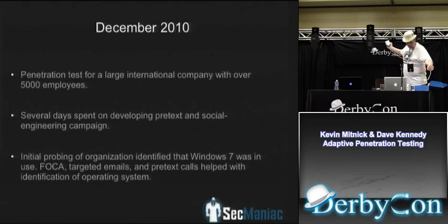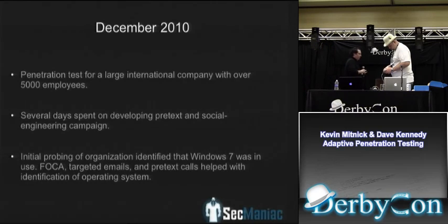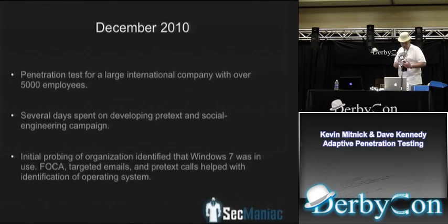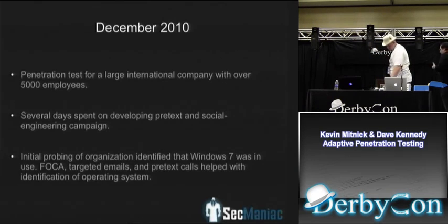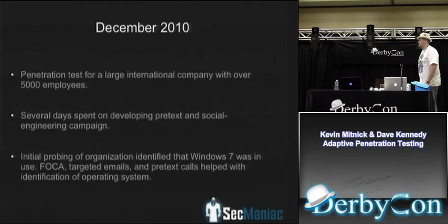We're very meticulous at setting up exact systems using VMware to have the exact environment. To find out which AV they're running, instead of calling the company directly, I do it more passively: I call the AV company pretending to be the client, saying we want to purchase more licenses. They'll look up the company name and be happy to make a sale - that's how I determine who the AV company is. We also use tools like FOCA and social engineering to get their environment. In this test, we found most users at the company were running Windows 7, which was surprising since at that time most people were running XP.